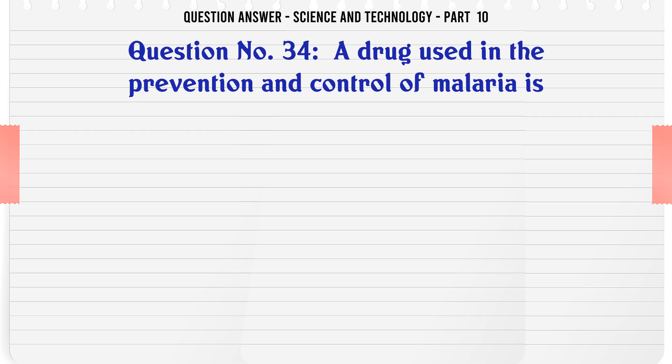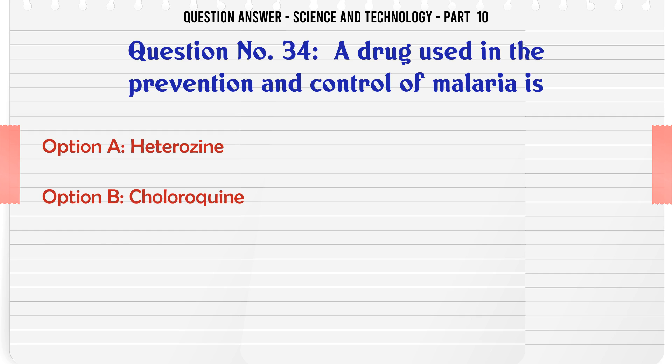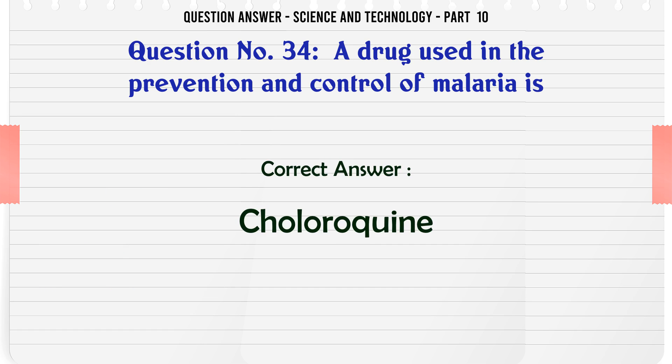A drug used in the prevention and control of malaria is. A. Heterosine. B. Chloroquine. C. Piperazine. D. Resorcinol. The correct answer is Chloroquine.